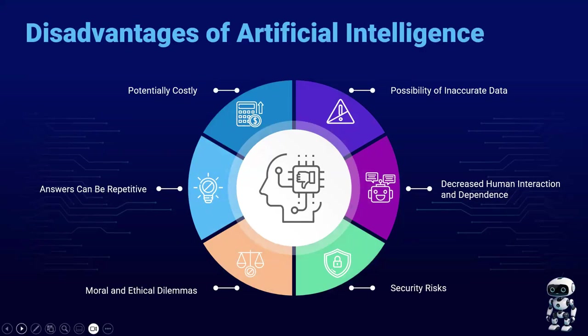Some of the major disadvantages: it can be potentially costly to implement AI, especially at an organizational level. The answers you get can be repetitive, where AI keeps generating the same kind of content over and over again. There are moral and ethical dilemmas — AI can't have a moral or ethical conscience. There is the potential for security risks, a decreased human interaction when you're using AI instead of a human in some instances, and of course the possibility of inaccurate data being provided. You do need to fact check the information you're receiving from artificial intelligence.